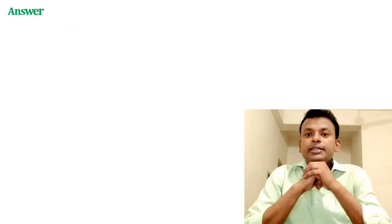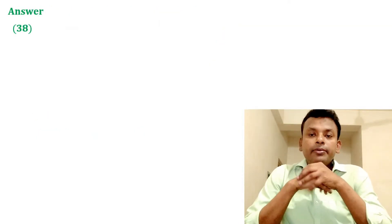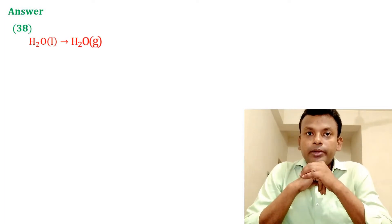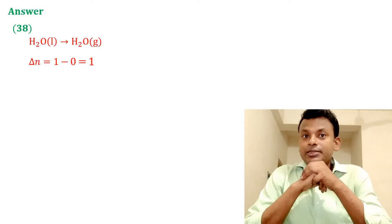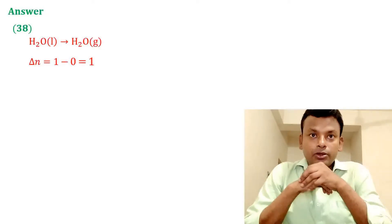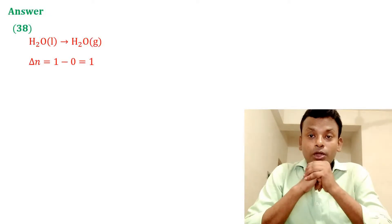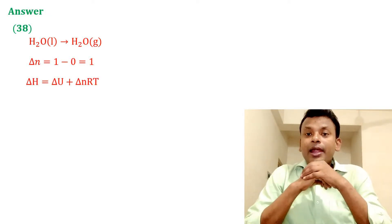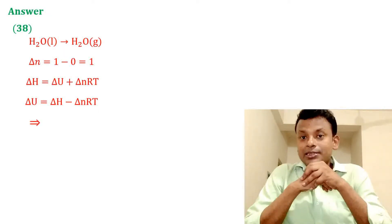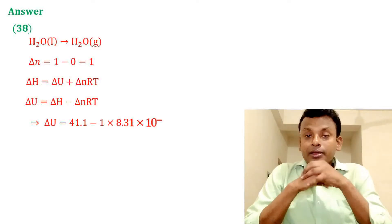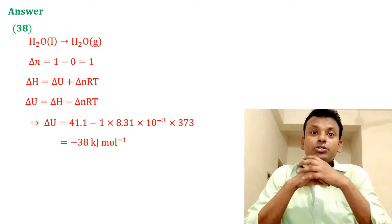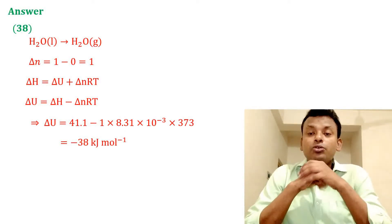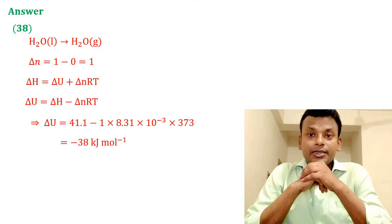This question was set in JEE Main 26th June 2022 evening shift. Answer is 38. For the equation H₂O(l) → H₂O(g), Δn = 1 (only gaseous state considered). Using ΔH = ΔU + ΔnRT, so ΔU = ΔH − ΔnRT. Putting in all values gives internal energy ΔU = −38 kJ/mol, so the answer is 38.